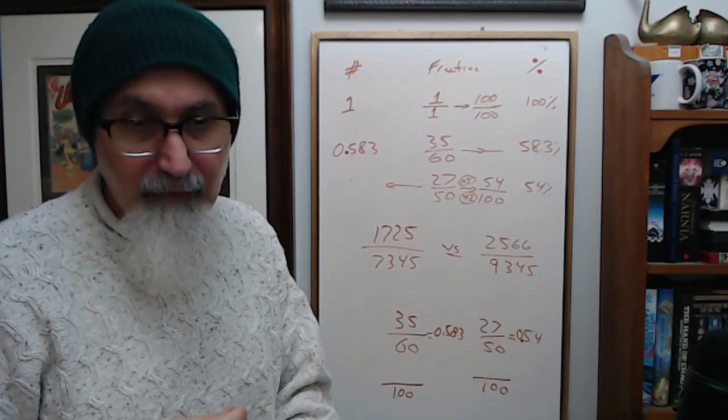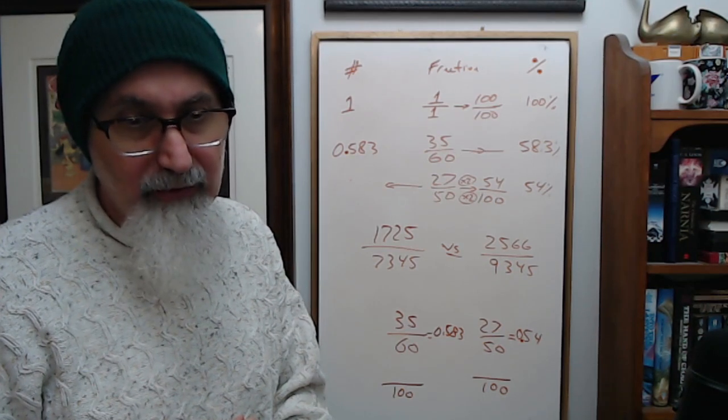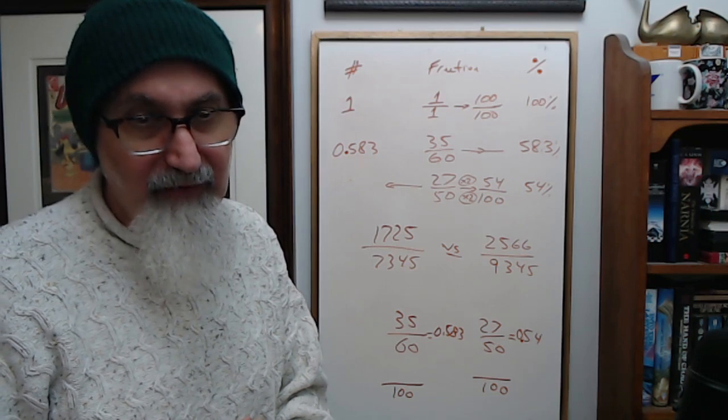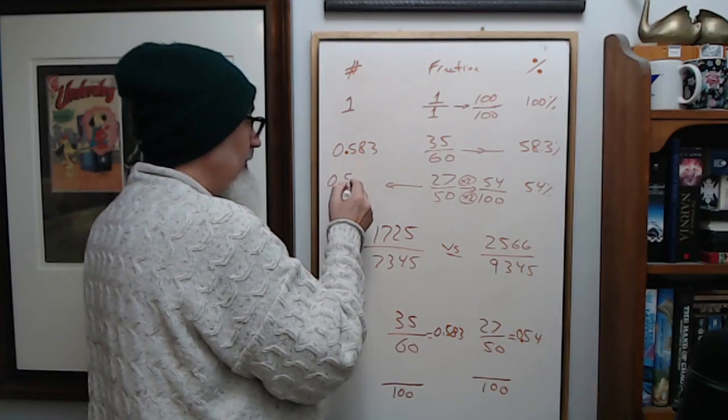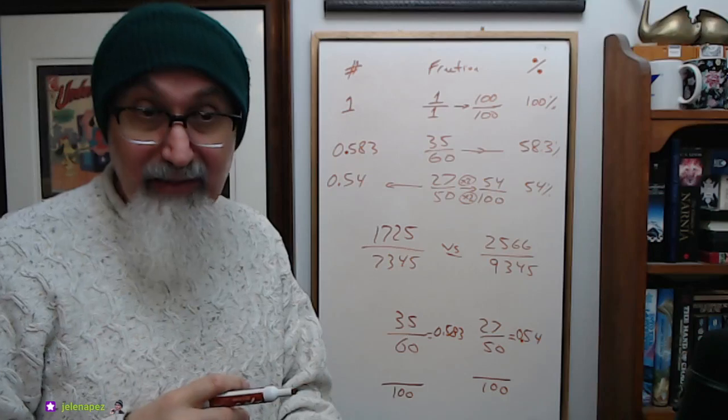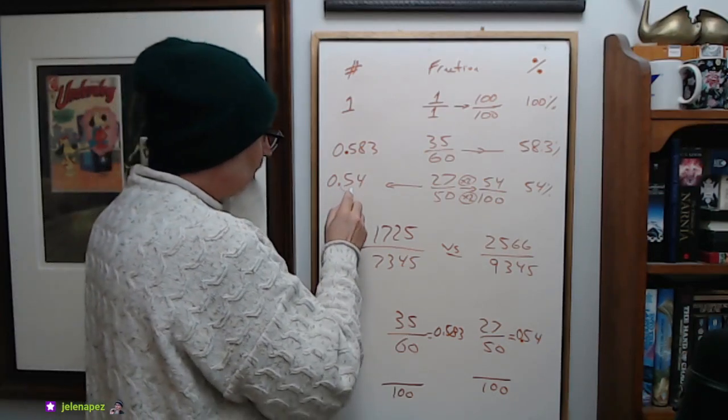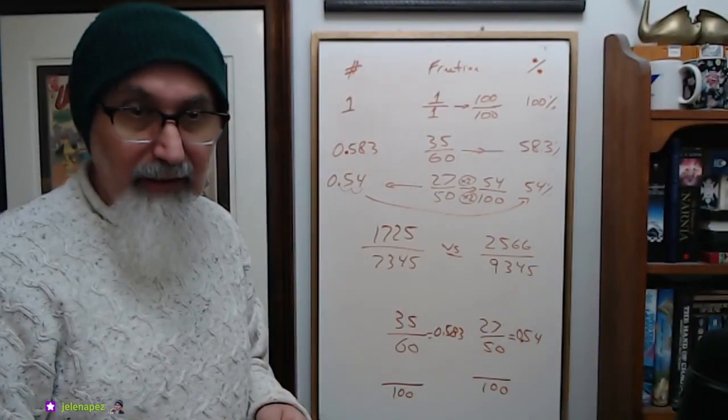Or you do it to a decimal first and then kick it up into a percent. If you go 27 divided by 50, you get 0.54, and the two dots mean two decimal places, so you move it two decimal places, you get 54 percent.